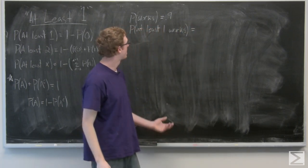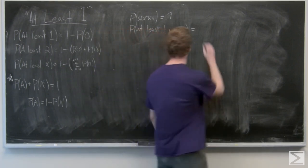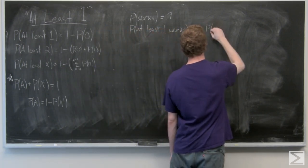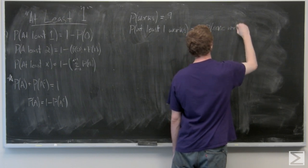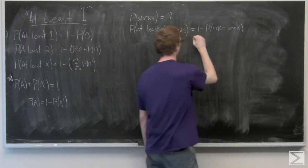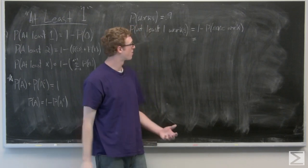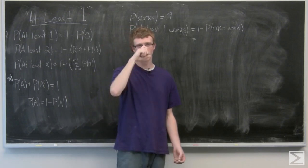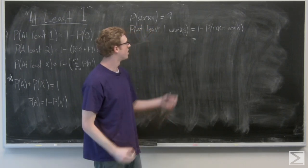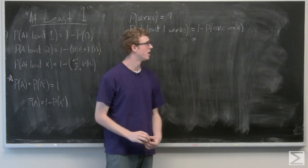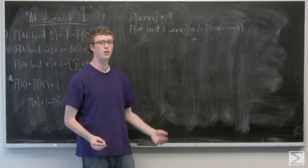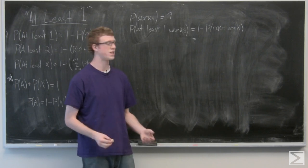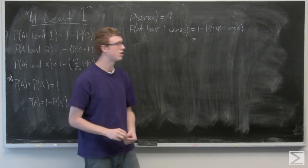So that's going to be one minus the probability that none of them work. And the problem gave us that the reactors were independent of one another. So the probability that none of them work is the probability that A and B and C don't work, which is 0.1 for each. So we just have that probability is 0.1 cubed.